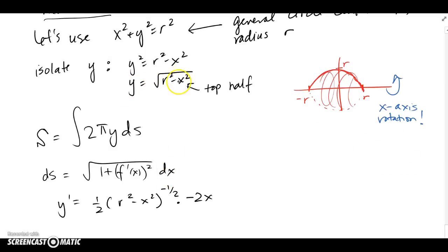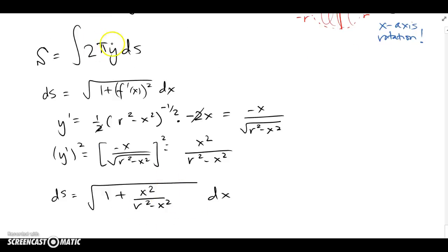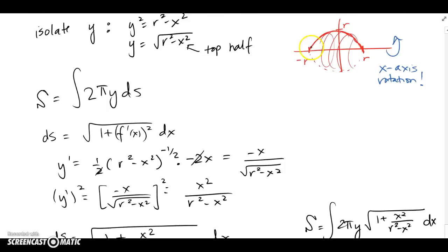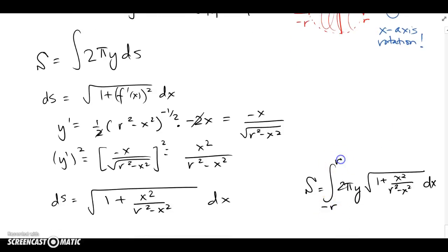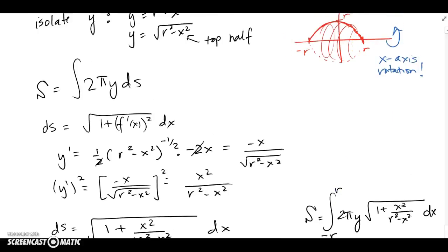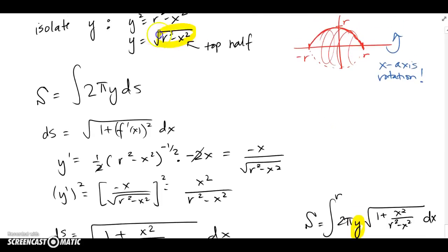Doing a DX problem with y = sqrt(r² − x²) isolated, we differentiate: y prime = (1/2)(r² − x²)^(−1/2) · (−2x) by the chain rule, where r is just a constant. Squaring y prime gives x²/(r² − x²). Adding 1 and putting it under the radical gives DS. The limits of integration for the full sphere are x = −r to x = r.